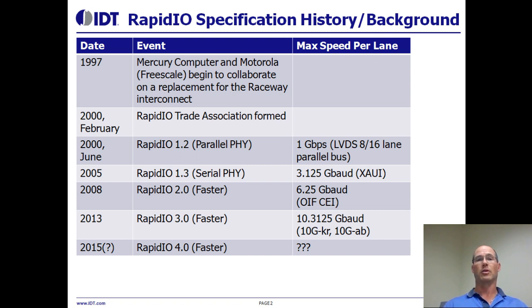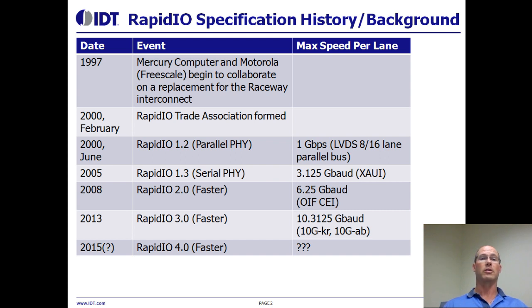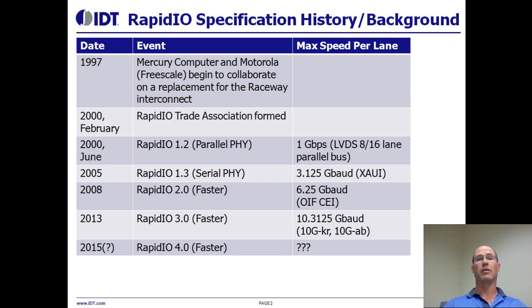RapidIO is also used largely in military compute, so high-performance mobile compute as well as industrial control and medical imaging. You find that RapidIO excels wherever there are size, weight and power constraints, and the latest example of that is that RapidIO was selected by NASA and a number of other companies as the next generation space interconnect. If RapidIO can meet the size, weight and power constraints of space, I'm sure it's ideal for your application.